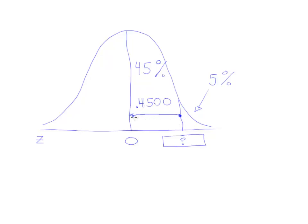And that would leave an area of 45% from here to the center. And we know that it's this area that's associated with this z-score on the z-chart that we're using.